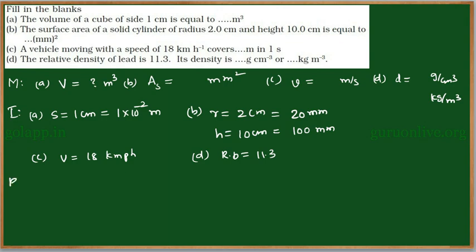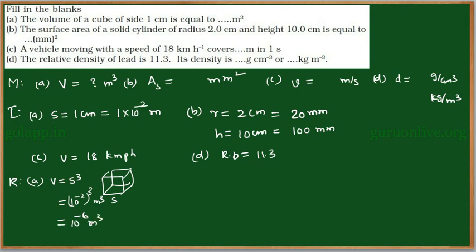Now for part A, the volume of the cube is V = S³. The side S = 10 to the power of minus 2 meters, so V = (10⁻²)³ meter cube, which equals 10 to the power of minus 6 meter cube. That is the volume of the cube whose side is 1 centimeter.